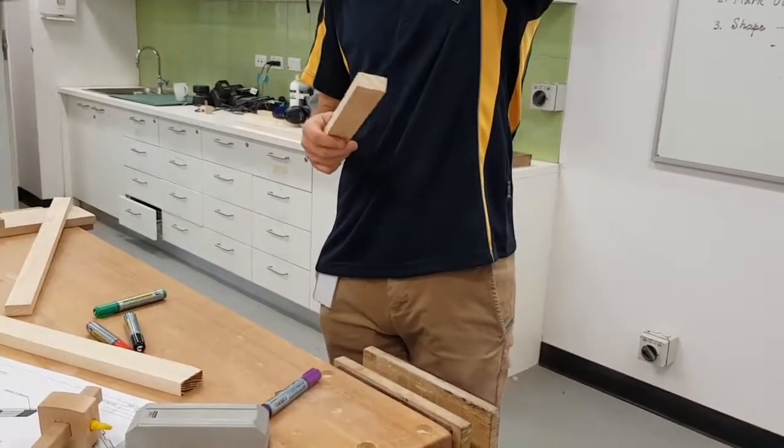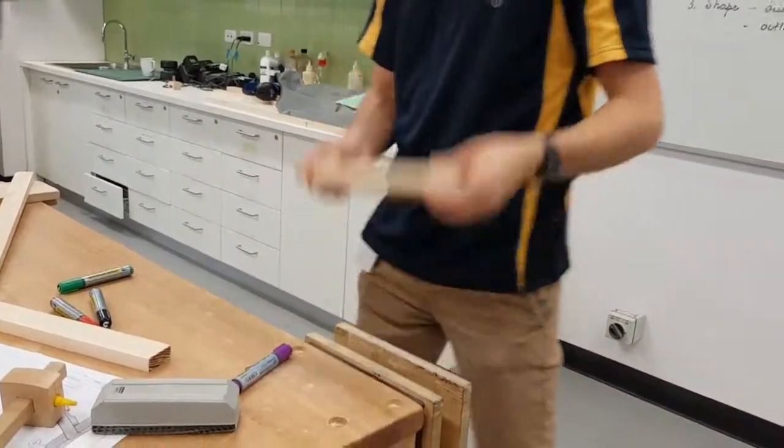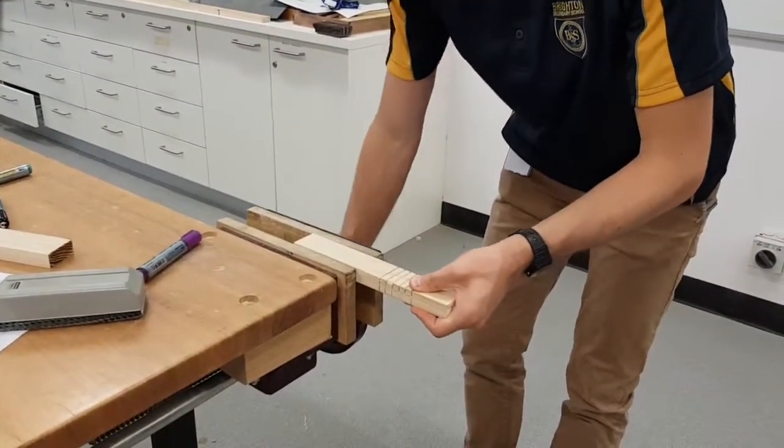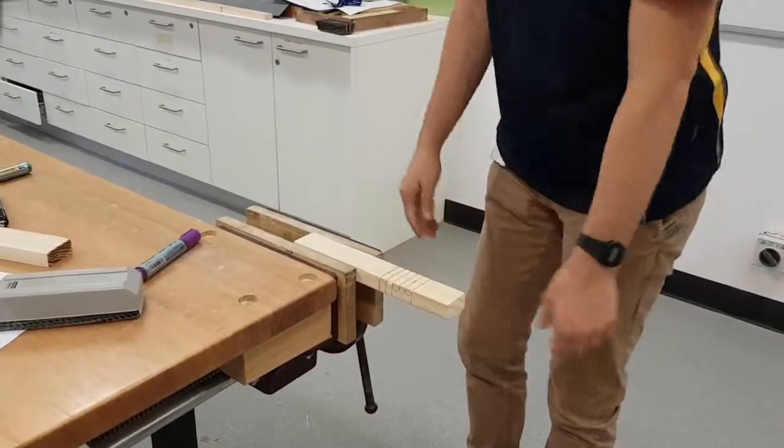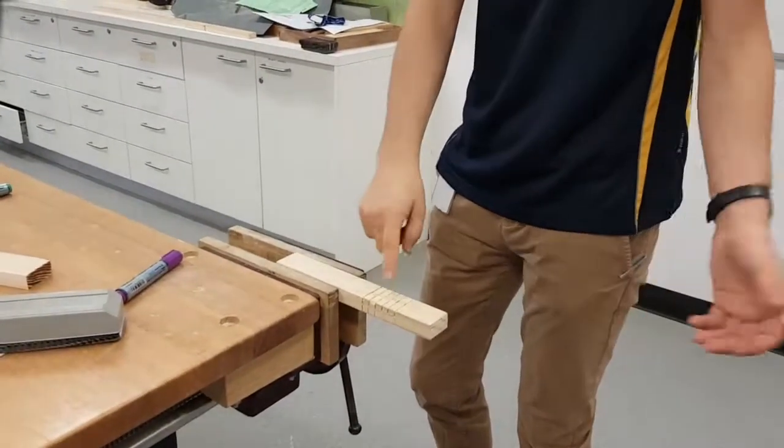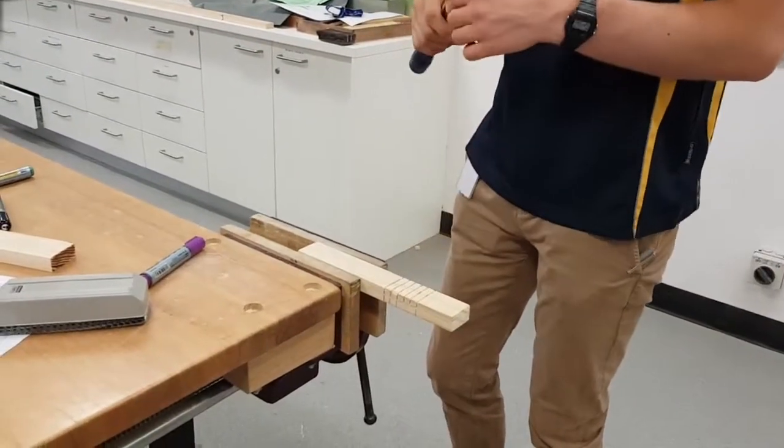Ethan, could you grab me one of the blue-handled chisels on the back wall? What we do is we place this into the bench vice like so, like we had just before, so it's sticking out. Now this is the bit, boys, you need to really pay close attention and look at this. Thank you very much, Ethan.